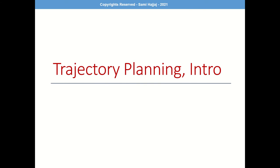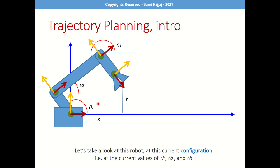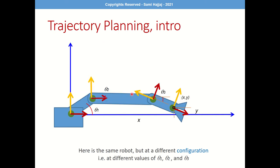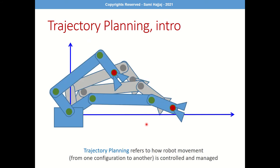Let's look at this robot and its current configuration. When we see the current shape of the robot — the exact values of theta 1, theta 2, and theta 3 — we call that a robot configuration. Here is the same robot at a different configuration: its shape, reach, and the orientation of the end effector are totally different. So trajectory planning is about how the robot travels from one configuration to another.